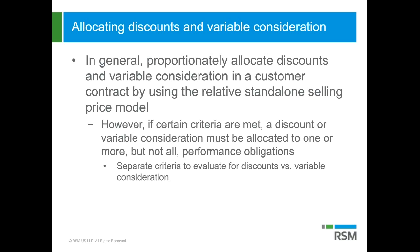For variable consideration, the criteria are different. The terms of the variable payment have to relate specifically to the entity's efforts to satisfy that particular obligation or transfer the distinct good or service, and allocating the variable consideration entirely to that particular performance obligation — or more than one — must be consistent with the overall allocation objective in ASC 606.